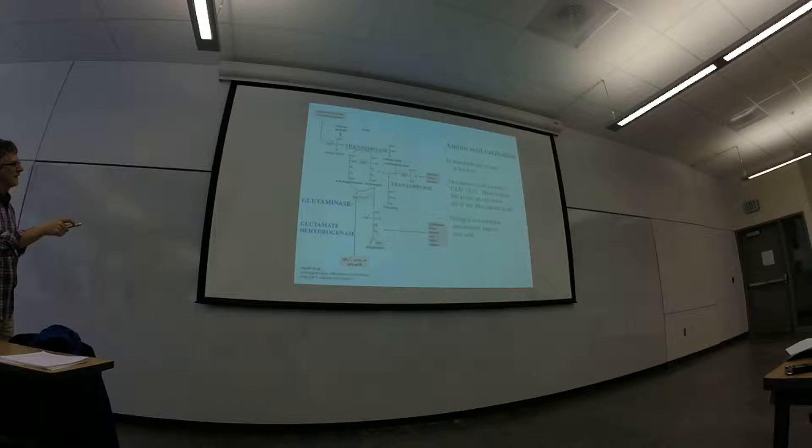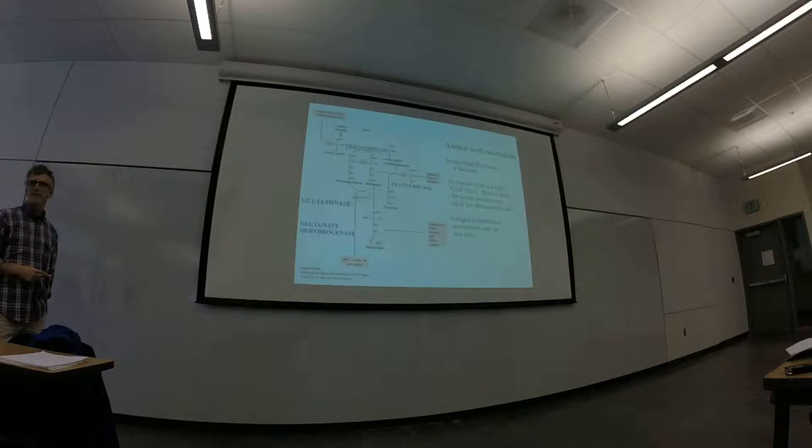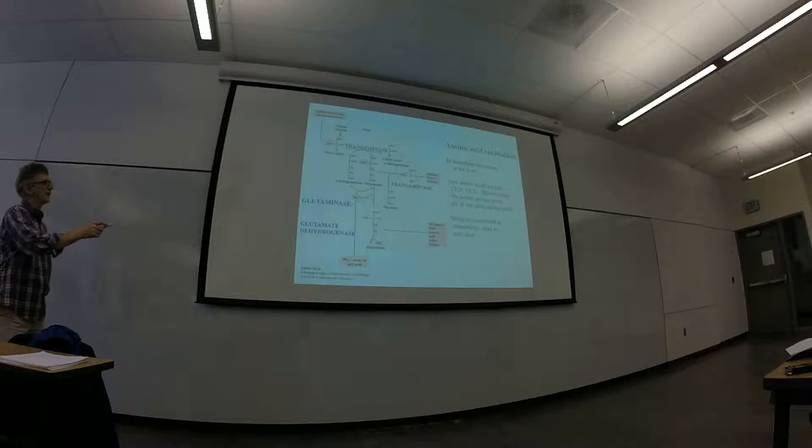we've got some amino acid. We've got alpha-ketoglutarate, and the product is glutamate and some other alpha-keto acid, which is dependent on what this amino acid is.